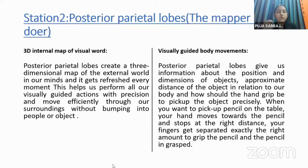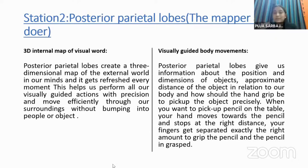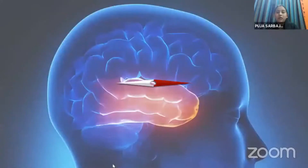Many children come to our clinic because they bump into objects even though their vision is 6/6. They miss stairs or bump into chairs right in front of them. At that point, we need to think about a posterior parietal lobe issue, and plan intervention accordingly.